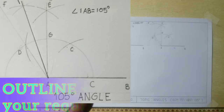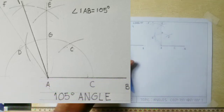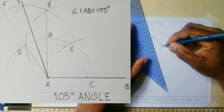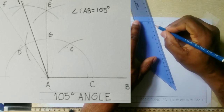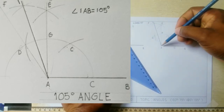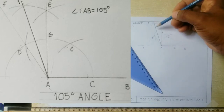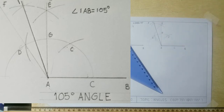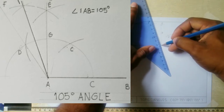I will now outline my required 105 degree angle. Also note, there may be situations where you may need to put a measurement to your angle lines. So AI could have been 70, it could have been 40, it could have been 30. So please note, there may be situations where you would have to measure the length of your AI and outline accordingly.